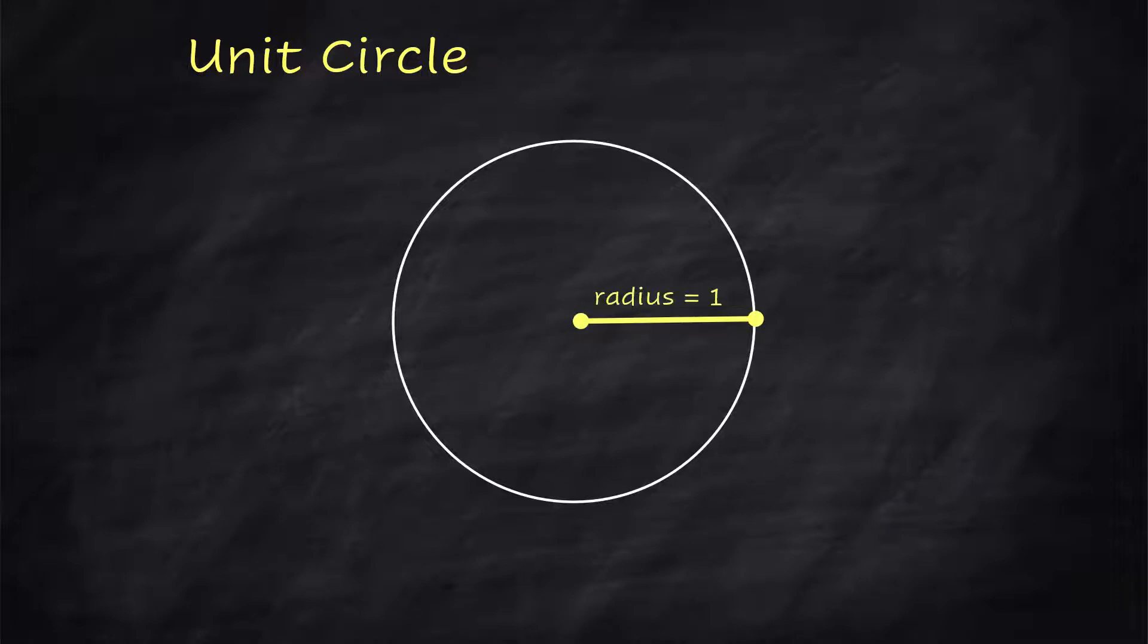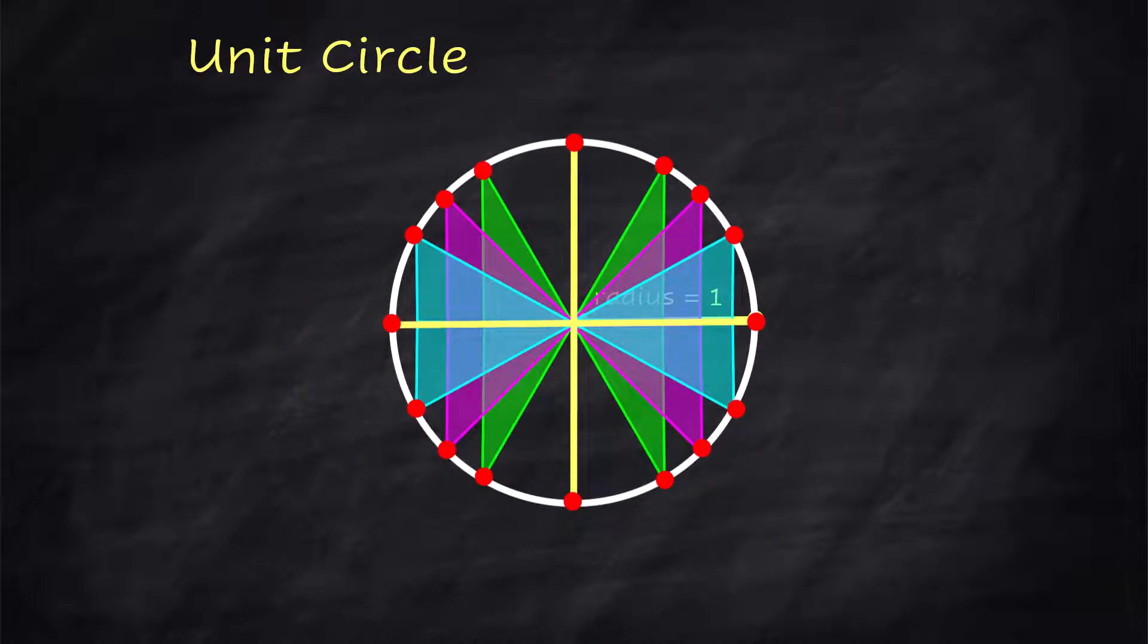A unit circle has a radius of 1. There are an infinite number of points on any circle, but the unit circle has 16 points that are super interesting.